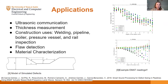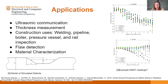EMATs are used on a much larger scale and are very popular for construction applications such as welding, pipeline and boiler inspection, and rail inspection — they can detect flaws wonderfully and identify material composition. They're also being tested for ultrasonic communication and for measuring the thickness of materials. However, it's not yet practical to use them at a very small scale. Here are some example EMAT readings to show how you could interpret the data.